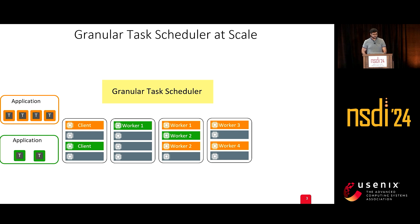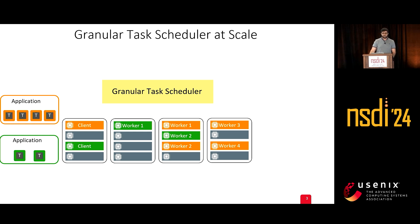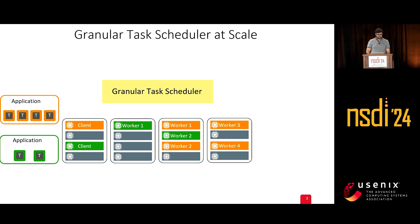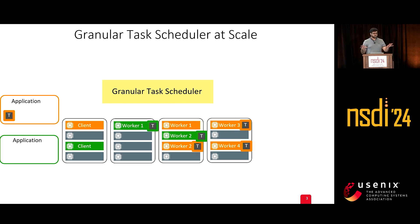Specifically, we have multiple granular applications composed into short-lived tasks that run in parallel. Each application is assigned a specific set of workers — what we call a worker pool — in the data center. Tasks are submitted to the task scheduler, which then selects workers, which could be a set of cores or any other resources.